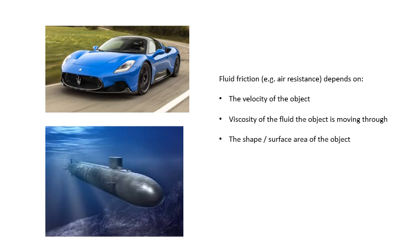What does fluid friction when an object moves through a fluid? A fluid is a liquid or a gas, so air resistance is fluid friction, and it depends on the velocity of the object, as I've just said. It depends on the viscosity of the fluid, so if the submarine's moving through water, it's much more viscous than air, and it will depend on the shape and the surface area of the object. Something called the drag coefficient. If you were talking about a car, you talk about the drag coefficient of the car.